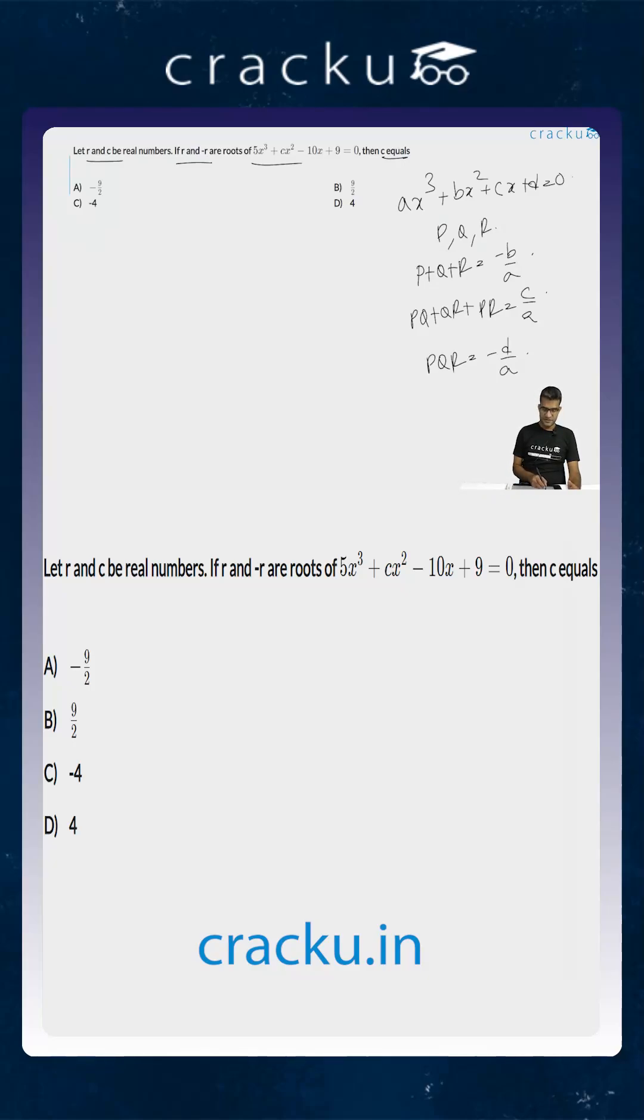Since R and -R are already two of the roots, if the third root is say small p, then the sum of the roots will be R + (-R) + P. This equals P, and using this formula, the sum of the roots P equals -C/5, or the third root is -C/5.